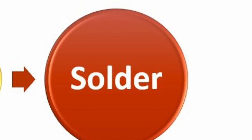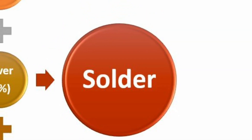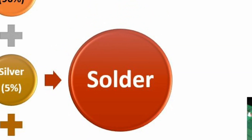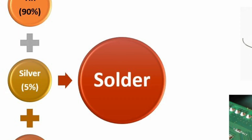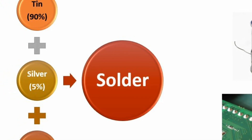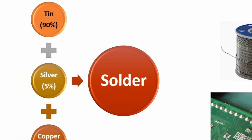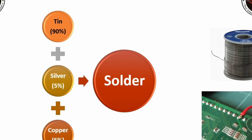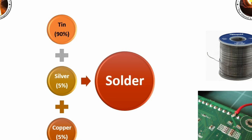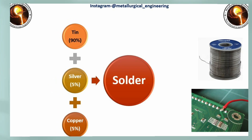Next is solder. It is a tin-based alloy and copper and silver are the main alloying elements. The composition of solder is 90 percent tin, 5 percent silver, and 5 percent copper. It is used in joining electrical components.